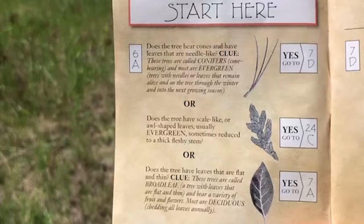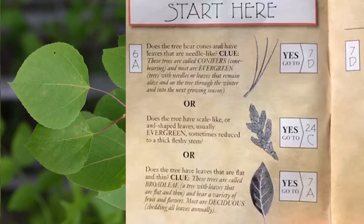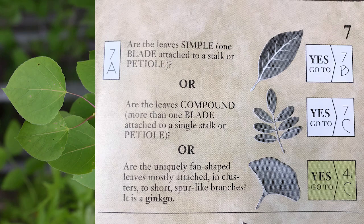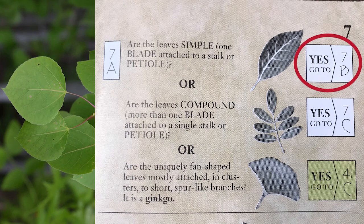Now it's your turn. Read the three descriptions and see which one best fits your leaf. If you chose 7A, you're on the right track. Read those descriptions — which one is it? If you answered 7B, you're correct.